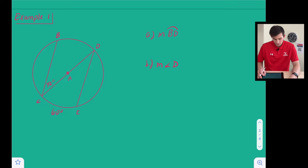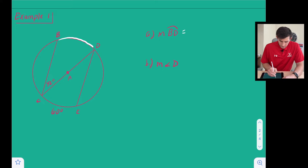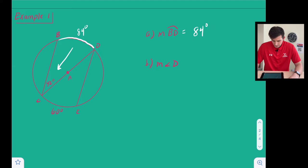Okay so example one we want to find the measure of arc BD. So that would be right here arc BD. So we know that our angle here is 42 degrees. So that means 42 is half of the measure of this arc. So this here is going to be 84 degrees. Okay so we just did 42 times 2.